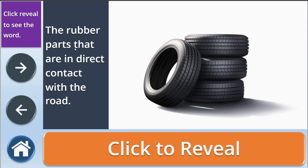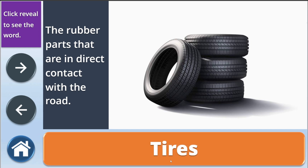Next, we have the rubber parts that are in direct contact with the road. These are called tires. You normally have four tires on a car, and they're filled with air. You might get a flat tire if you run over a nail or something sharp, and with a flat tire you need to change the tire or put more air in it.